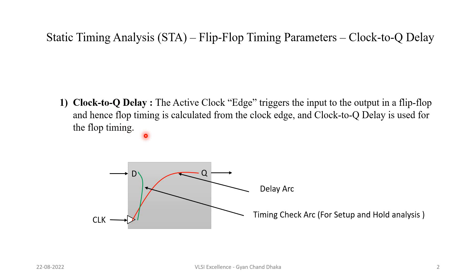As we discussed earlier in some of our STA chapters, whenever there is an active edge at the clock pin of the flip-flop, the input data present at the synchronous data pin — which is the D pin — will get propagated to the output pin of the flip-flop. This is nothing but clock-to-Q delay. The clock-to-Q delay basically accounts for the delay between when the active edge happens at the clock pin and when the data is available at the output pin.